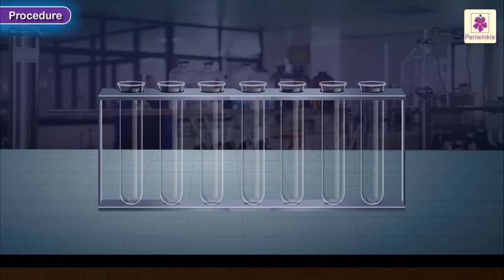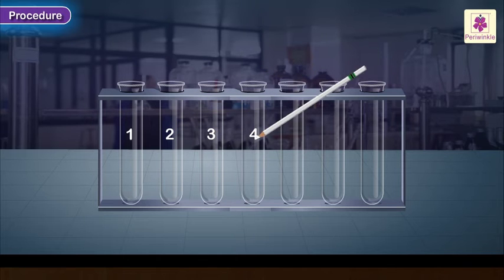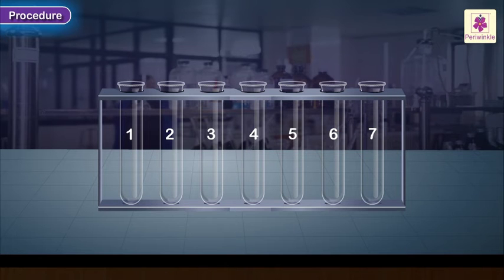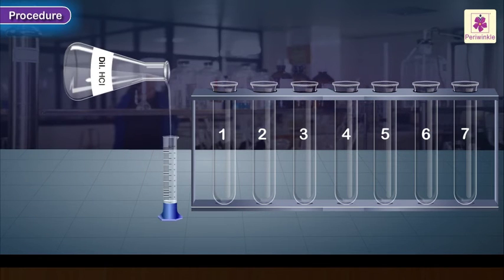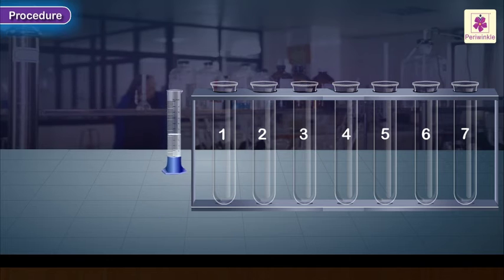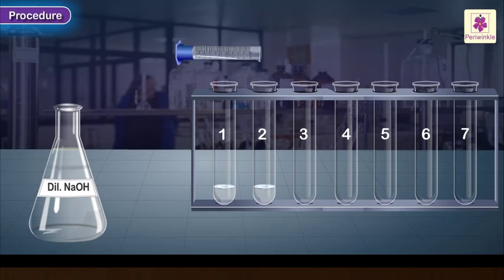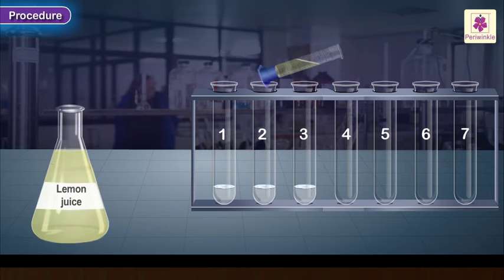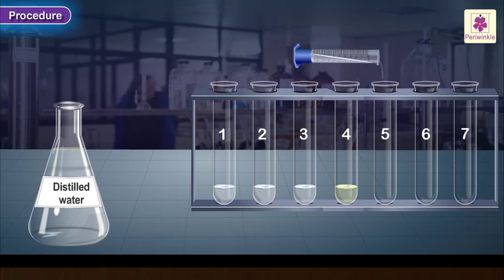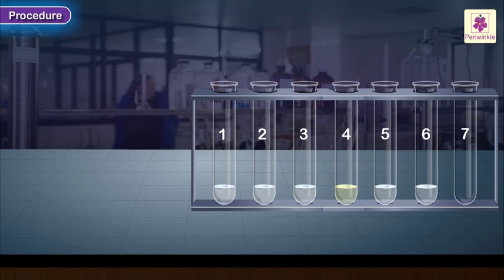Take seven clean test tubes, as there are seven samples to be tested, and using a glass marking pencil, number the test tubes one to seven. Take about two ml of the first test solution, dilute hydrochloric acid. In a similar manner, take two ml of each of the remaining solutions to be tested in the correspondingly numbered test tubes.